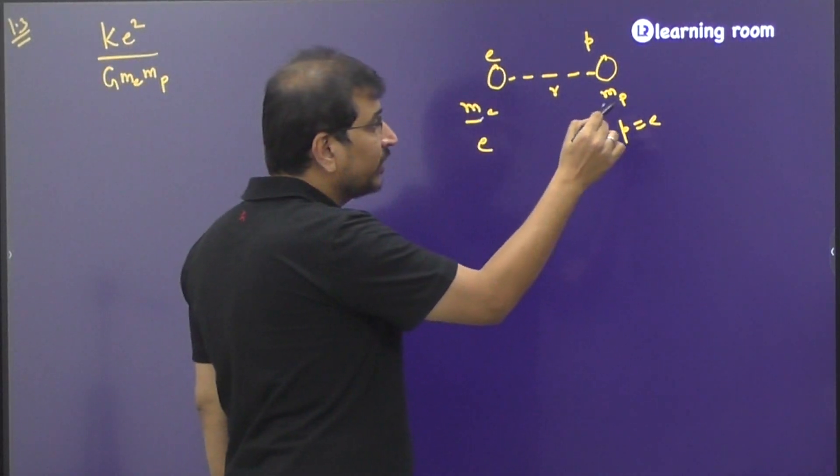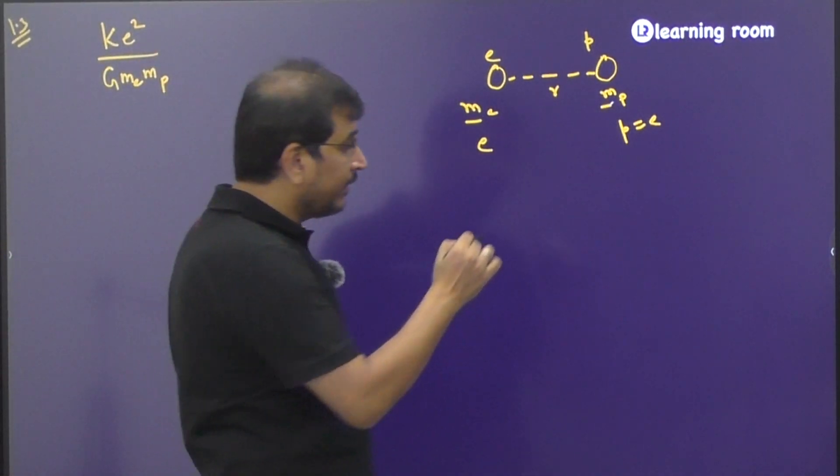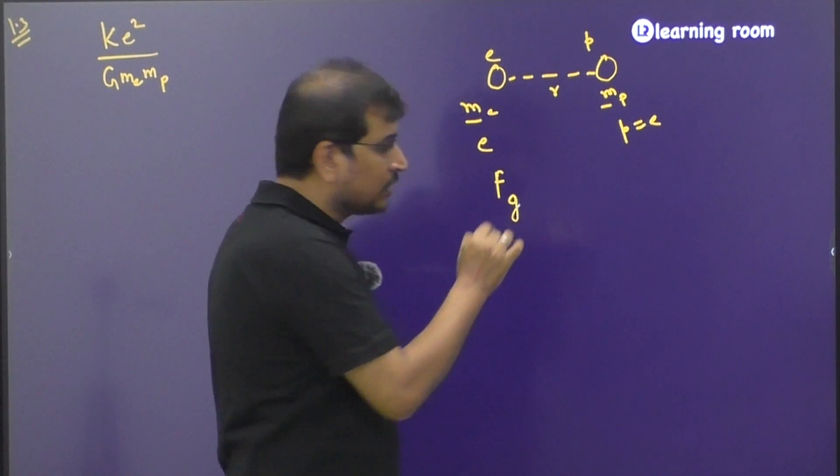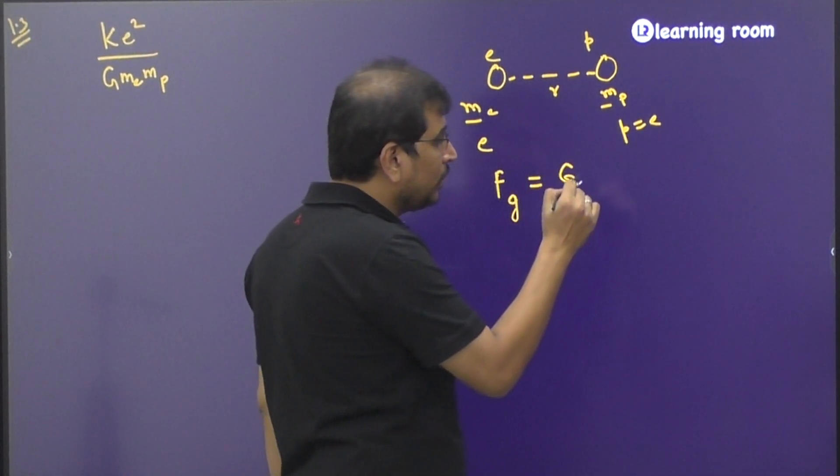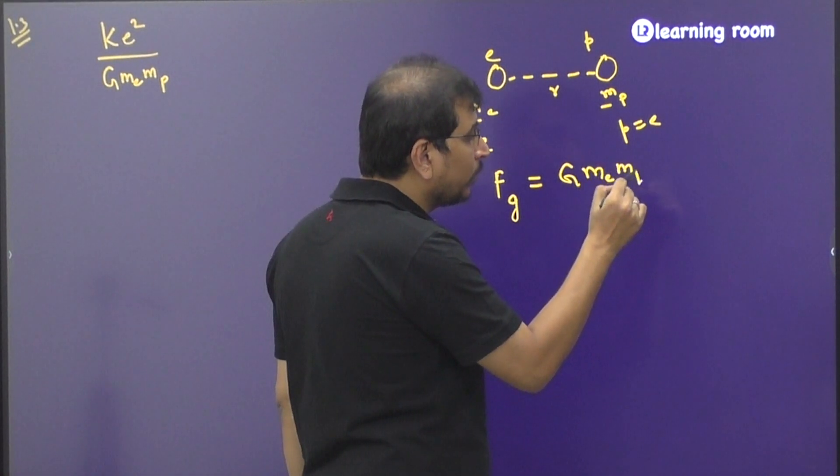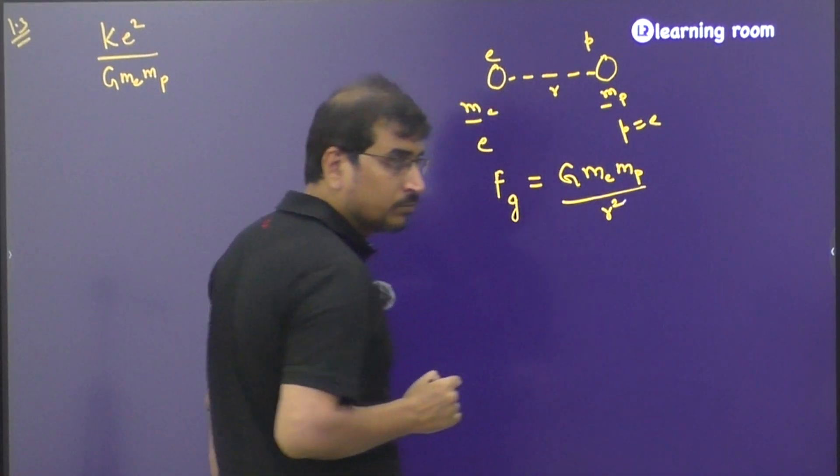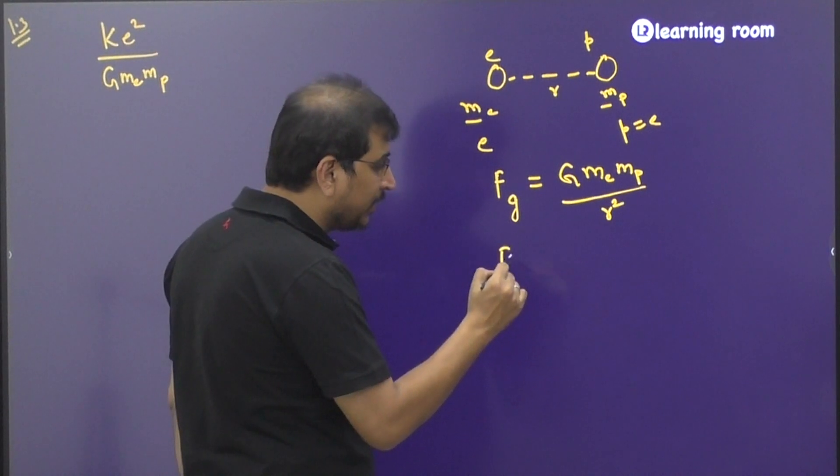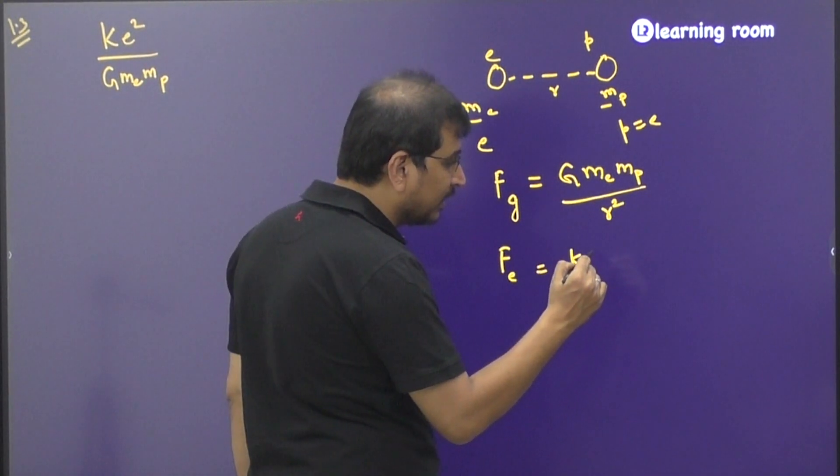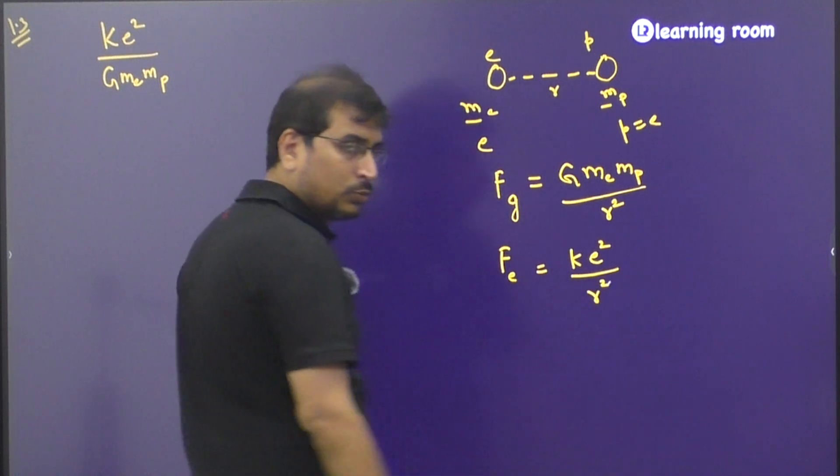Now because of their masses, they will experience the gravitational force given by G into me into mp divided by r² and due to the charges, they will experience the electrostatic force which is given as ke² divided by r².